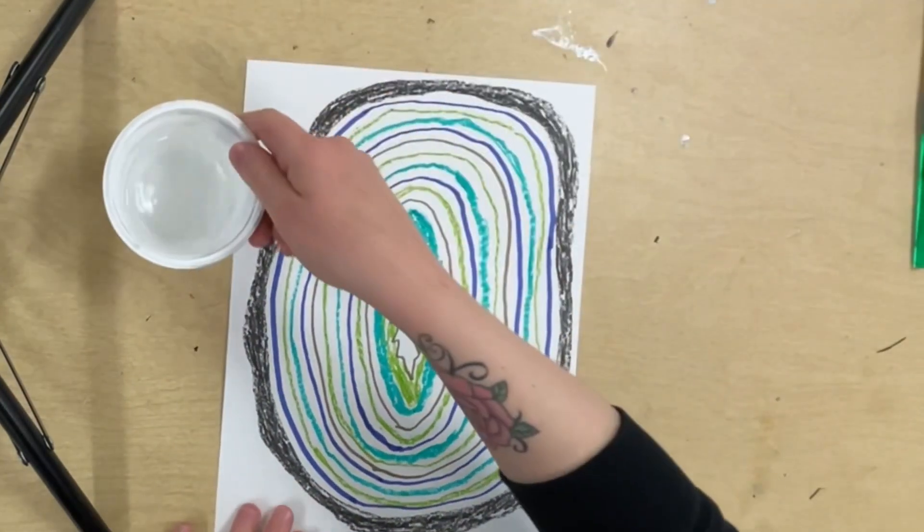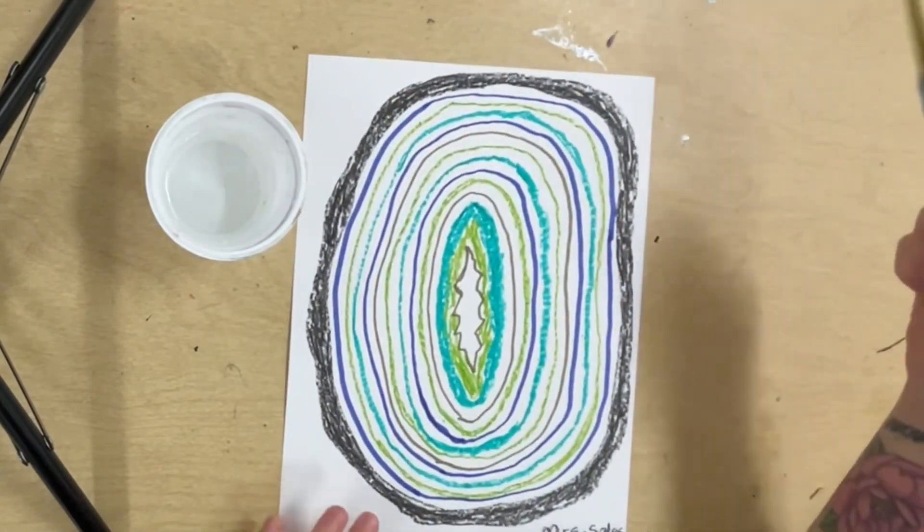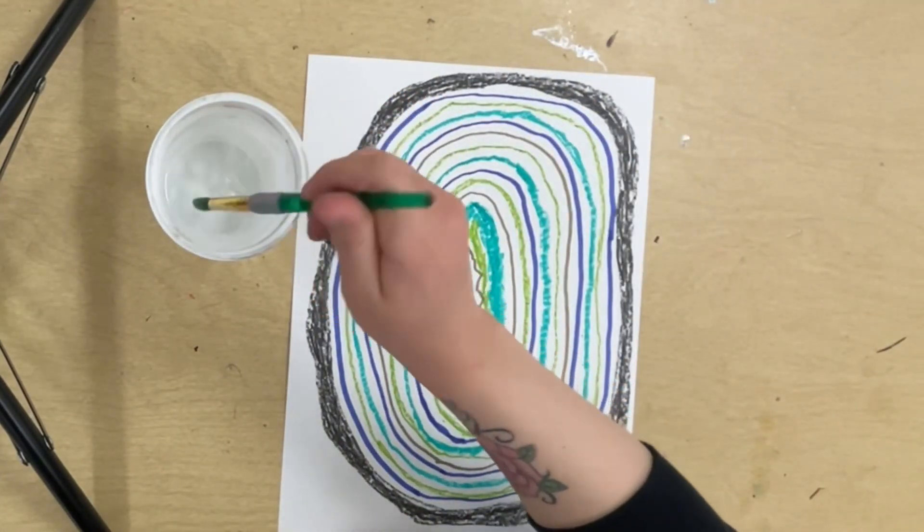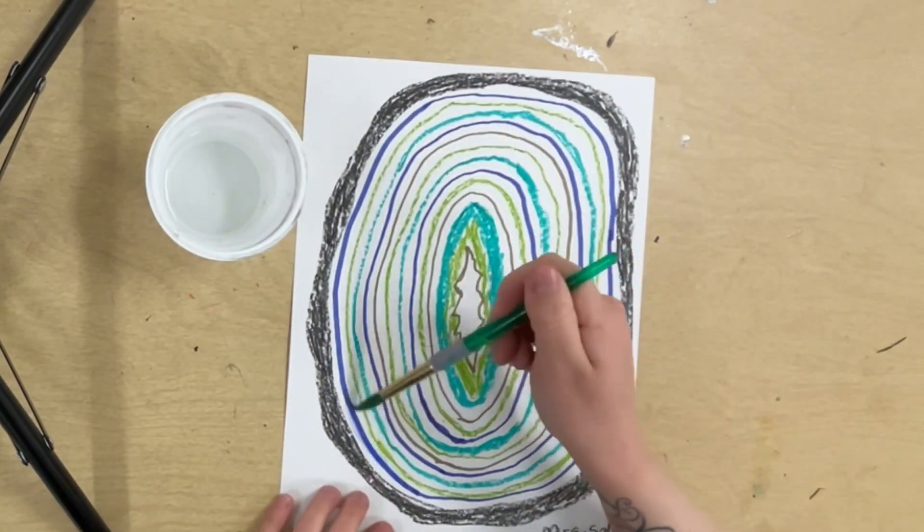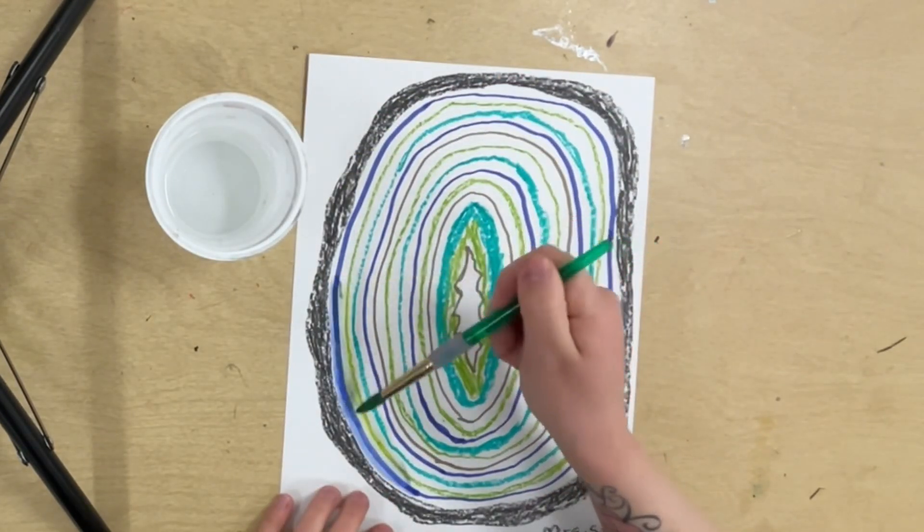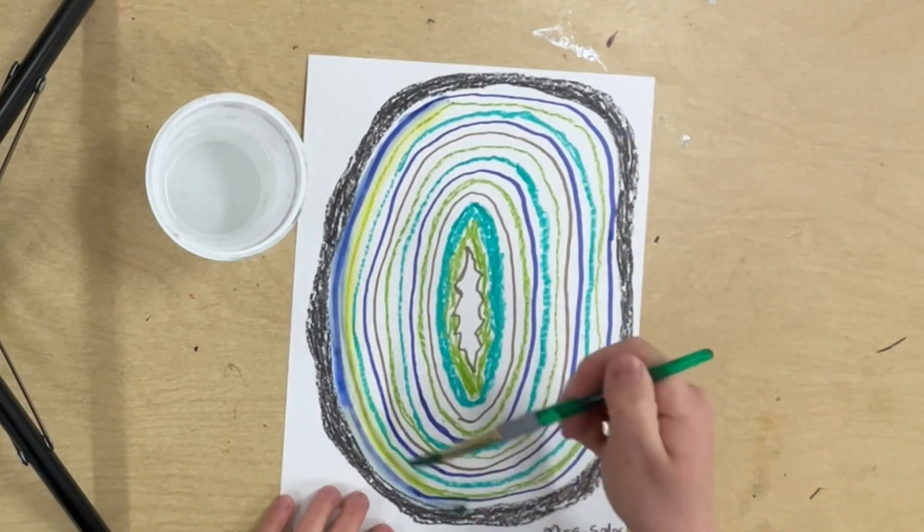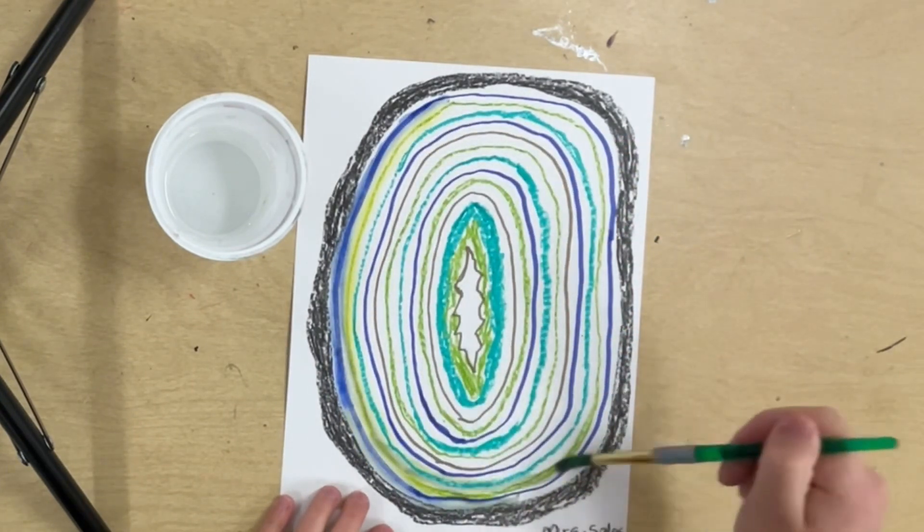Alright, well I'm done drawing my layers, but I'm not quite done with my artwork yet. Because I'm going to take a cup of water and a paintbrush, and I'm going to gently paint around the inside of the geode. And that will turn my marker and my watercolor crayon into watercolor paint.